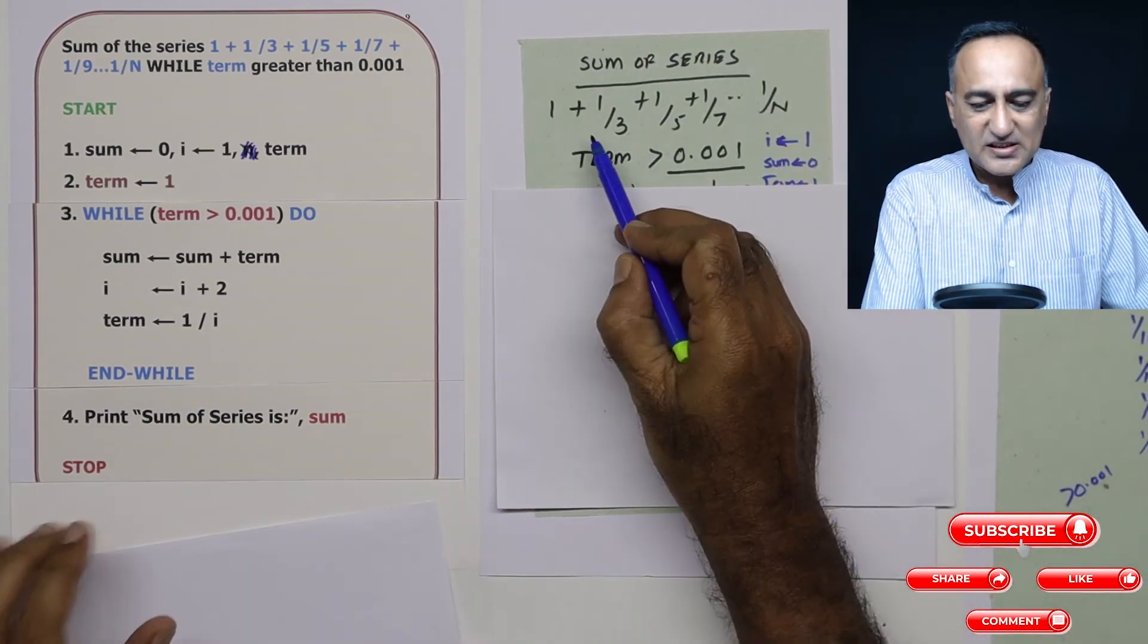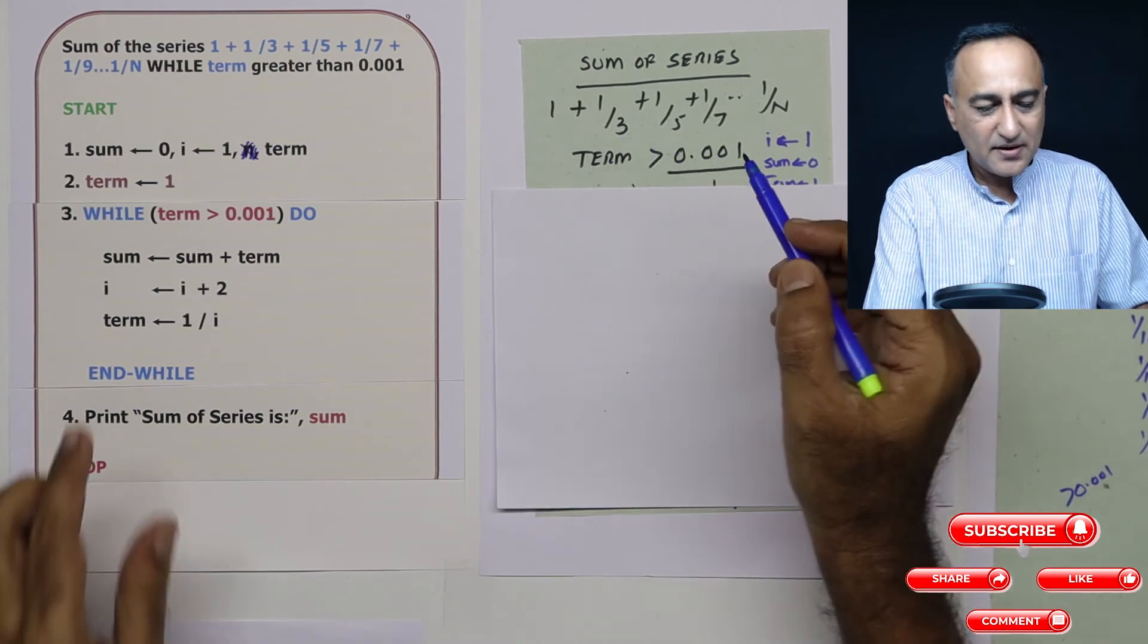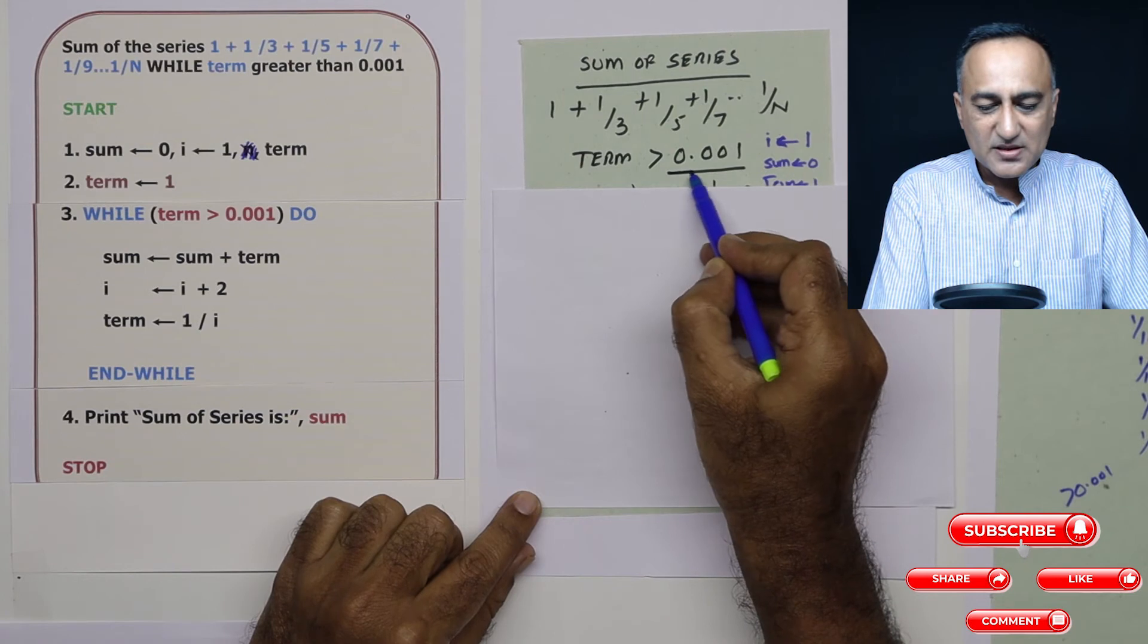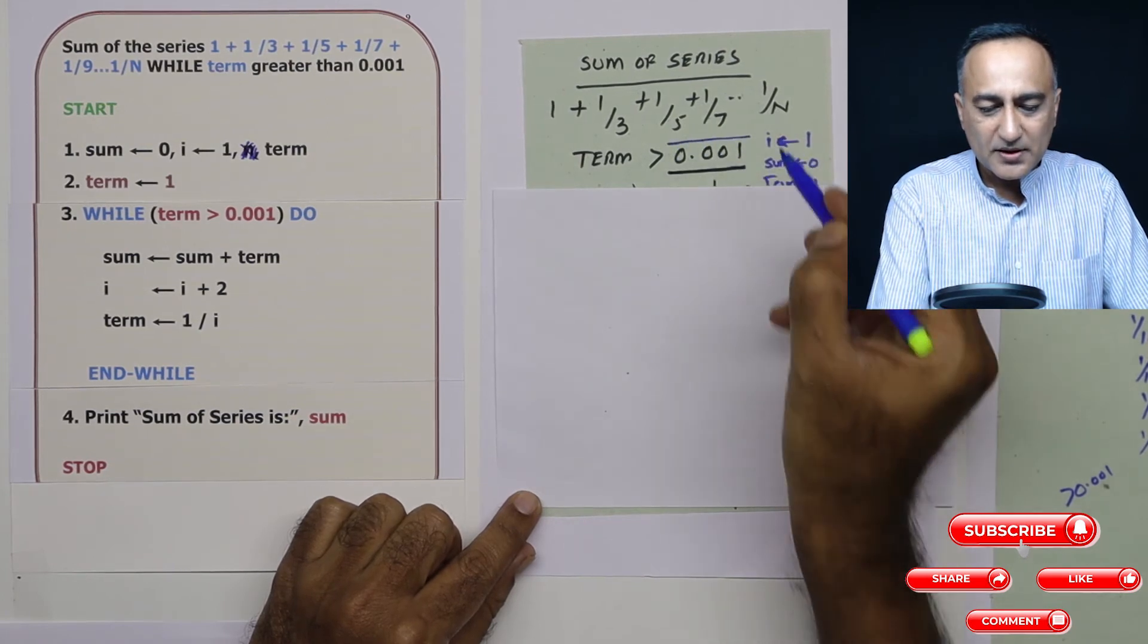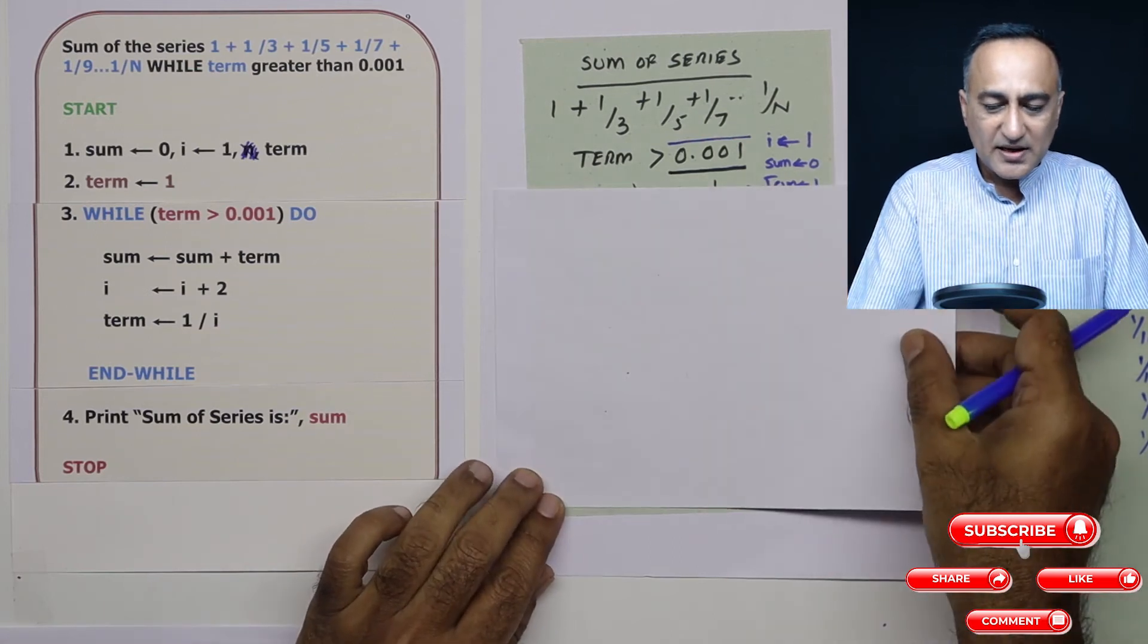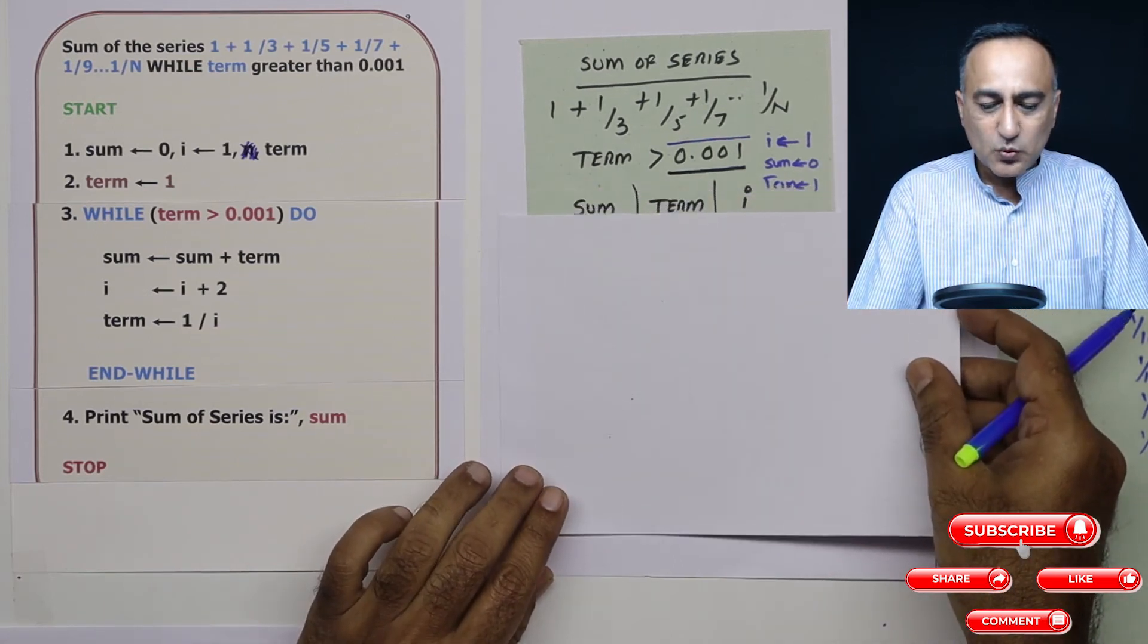Now, this is your series. Initially term is 1, so as long as term is greater than 0.001, I continue to add term to sum. So initially i is 1, sum is 0, term is 1.